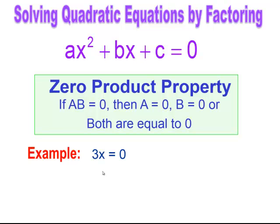So we can see what this means. If I have three times x and it equals zero, well my three isn't zero, so x must be zero.